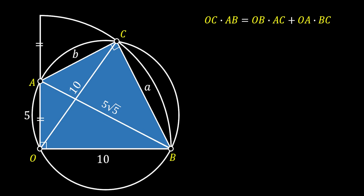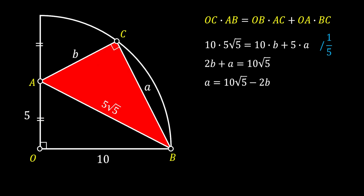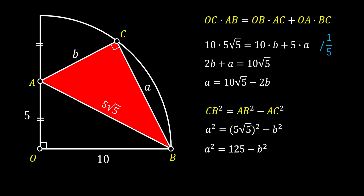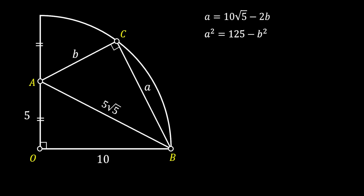Substituting our values into Ptolemy's formula and dividing everything by 5, we get our first equation: a = 10√5 − 2b. For a second equation, we apply the Pythagorean theorem to the red triangle ABC: CB² = AB² − AC², which gives us a² = 125 − b².